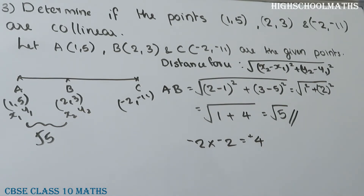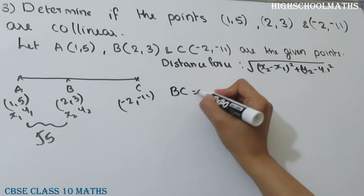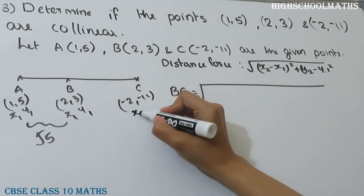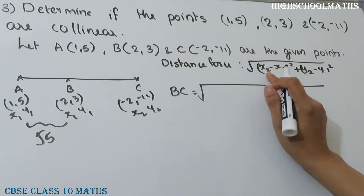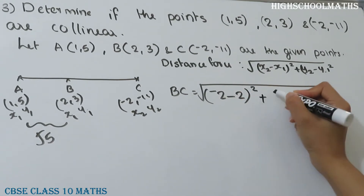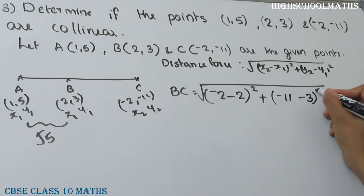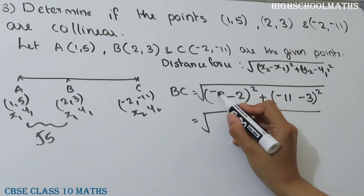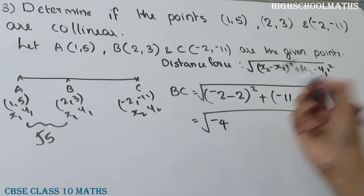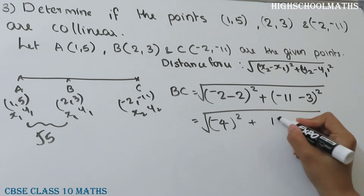Now we find BC. B is (2,3), so x1=2, y1=3; C is (-2,-11), so x2=-2, y2=-11. BC equals the square root of (-2 - 2) squared plus (-11 - 3) squared.